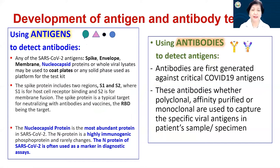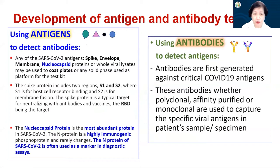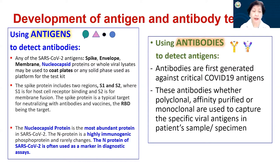The beauty of immunology for antigens and antibodies is you can use one to detect the other: you can use antigens to detect antibodies, and you can use antibodies to detect antigens — this is the basis of complementarity. So using antigens to detect antibodies: any of the SARS-CoV-2 antigens like spike, envelope, membrane, nucleocapsid proteins, or even whole viral lysates may be used to coat plates or any solid phase used as a platform for the test kit. Some kits use S1 and S2 or even the RBD as the coating.